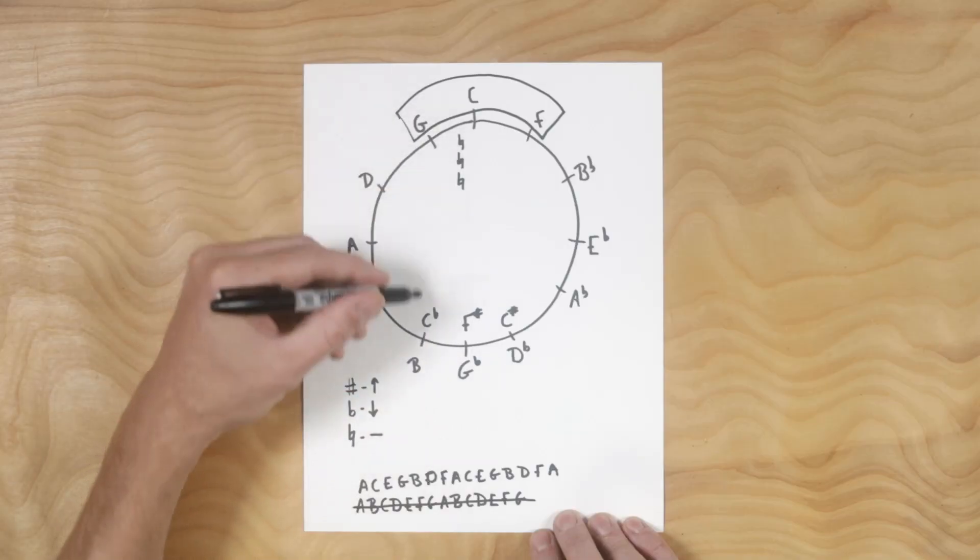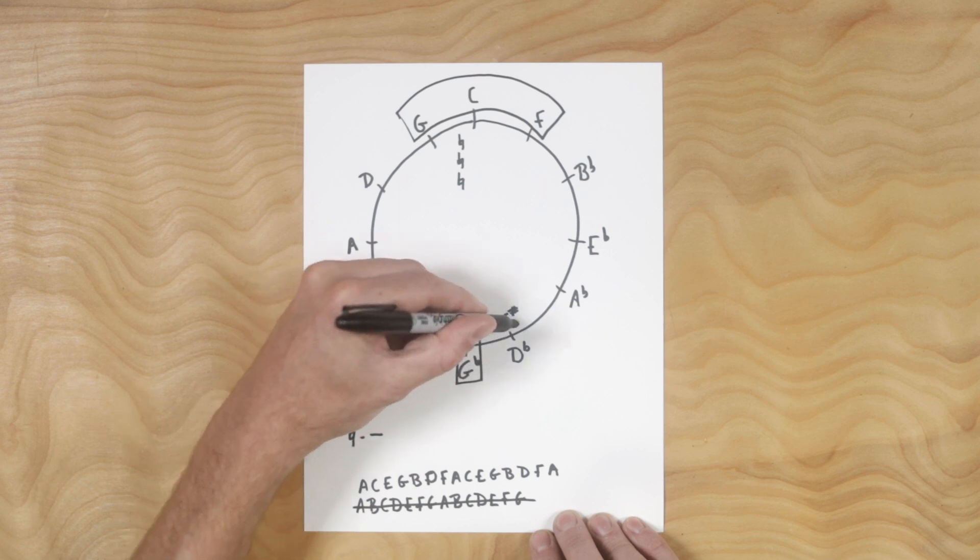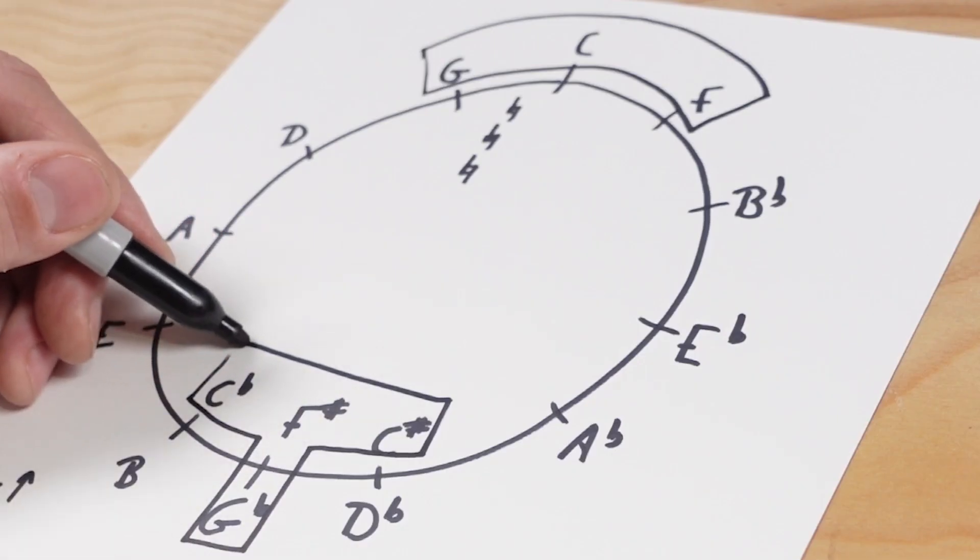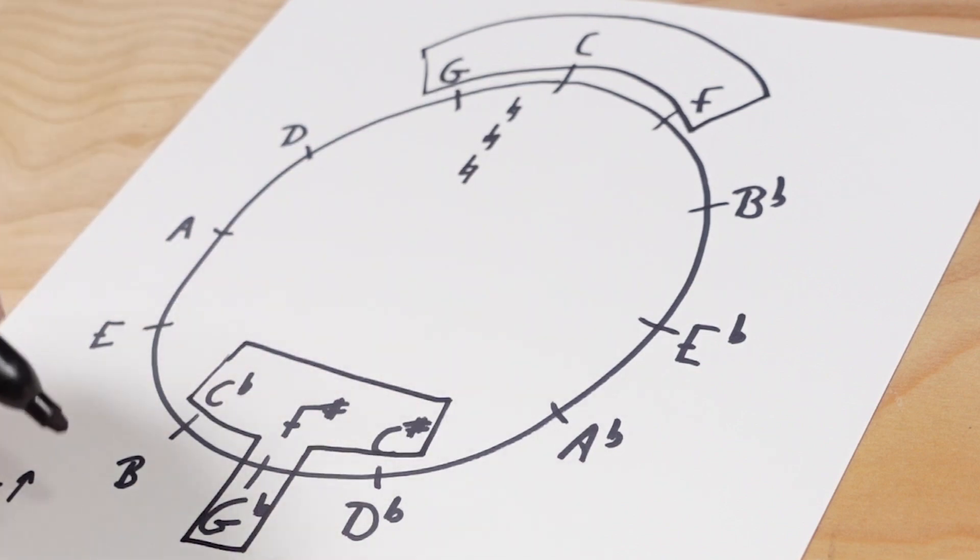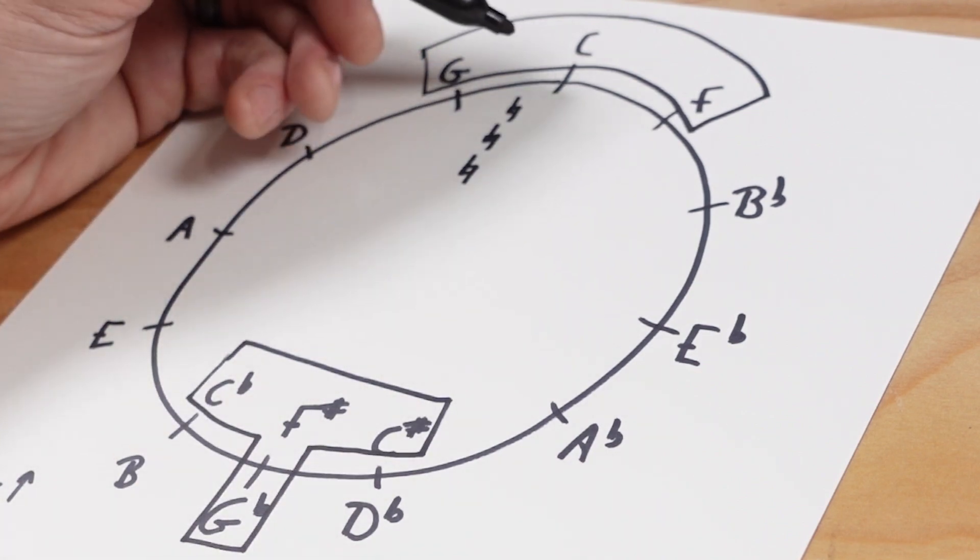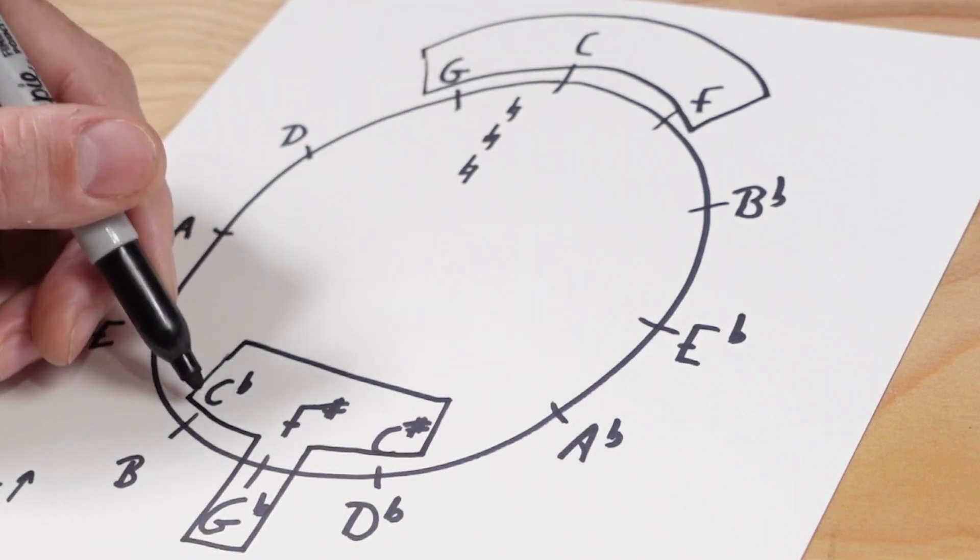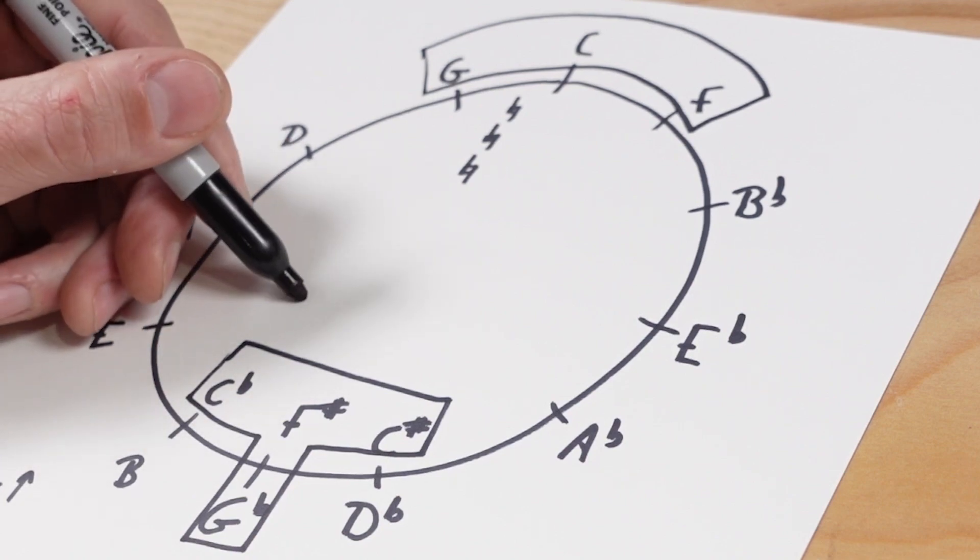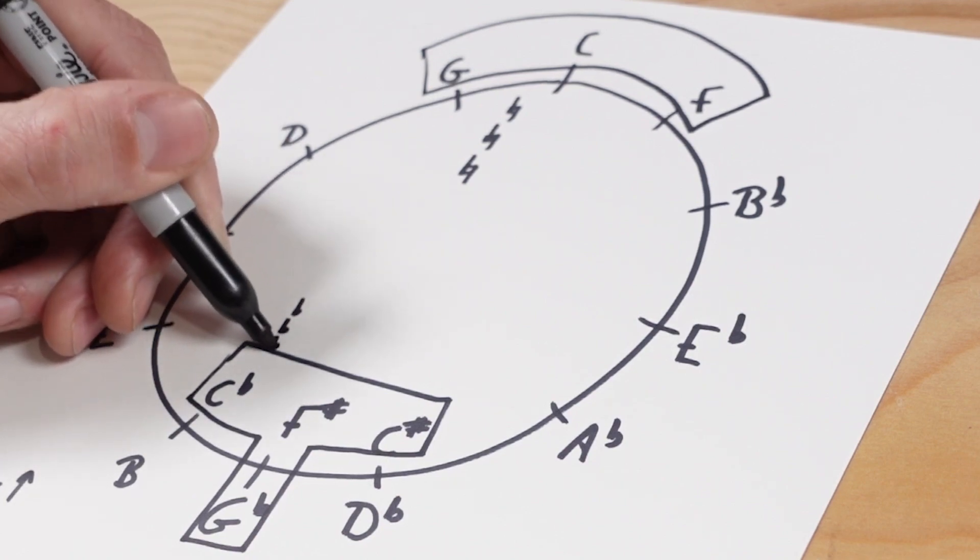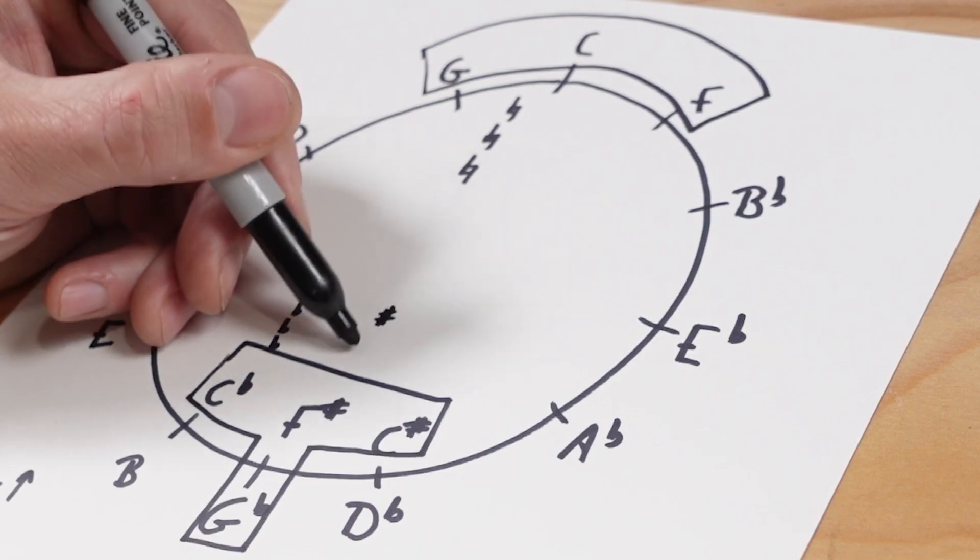Now, if we go down here on the opposite end of the circle, here's our next quadrant. We have this T down here. So it's opposite of the circle. That means everything is flipped. If all of them are natural, and now the letter name starts with a flat, that means all the notes are flat. If it started with a sharp, that means all the notes are sharped.